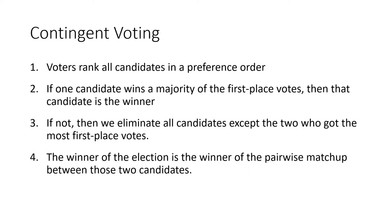Here are the details for contingent voting. We start by having voters rank all candidates in a preference order. If one candidate wins a majority of the first place votes, we're done and declare that candidate the winner. But if no candidate has a majority, we eliminate all candidates except the two who got the most first place votes, and then the winner is determined by the pairwise matchup between those two.